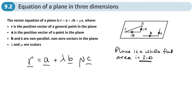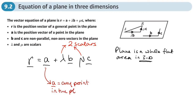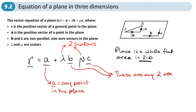You'll notice this time there are two different scalars — two scalars this time. And we have three different vectors. Just like before, A is any point in the plane, just as it was any point on the line. And B and C are any two non-parallel vectors in the plane.